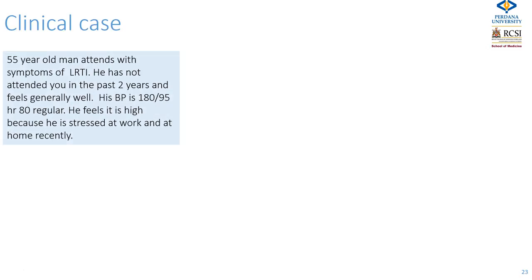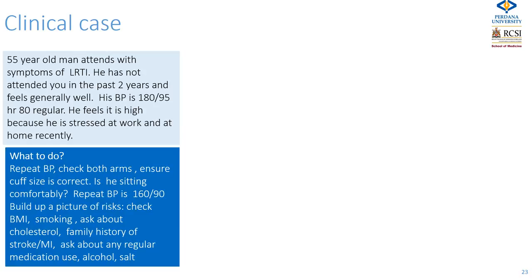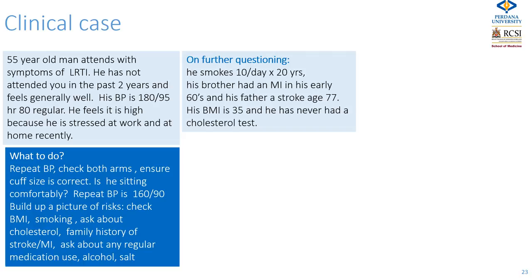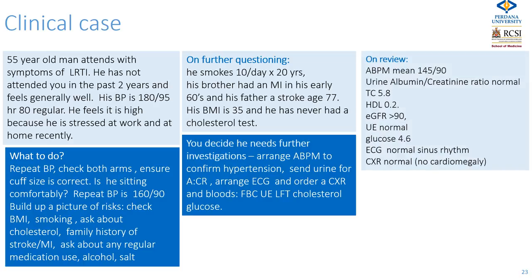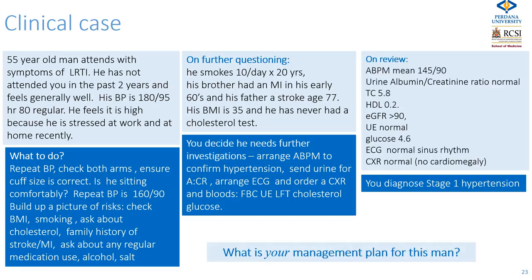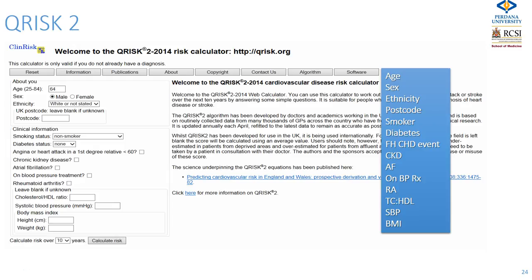Let's go back to the clinical case. He came in with a lower respiratory tract infection and was found to have a raised blood pressure. On history-taking, several relevant risk factors were identified. An ambulatory blood pressure monitor showed a mean systolic and mean blood pressure of 145 over 90. How do you manage him now? Take time to reflect on what medication, health advice, and lifestyle advice you would give him, and consider calculating his Q-Risk 2 score.